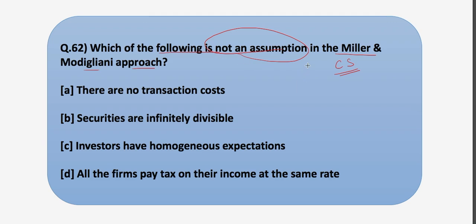There are six assumptions of MM approach. The first assumption is that the capital markets are perfect and complete information is available to all investors free of cost. The second is that there are no transaction costs. Third is that the securities are infinitely divisible.